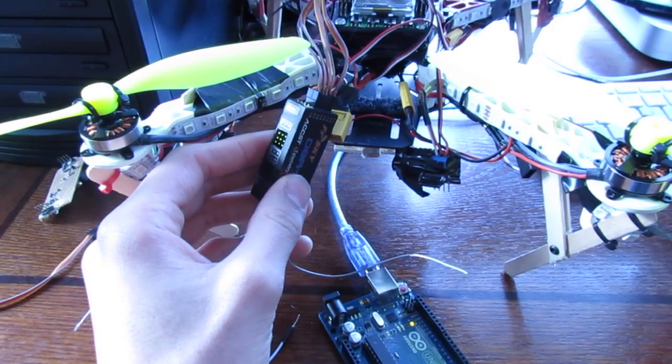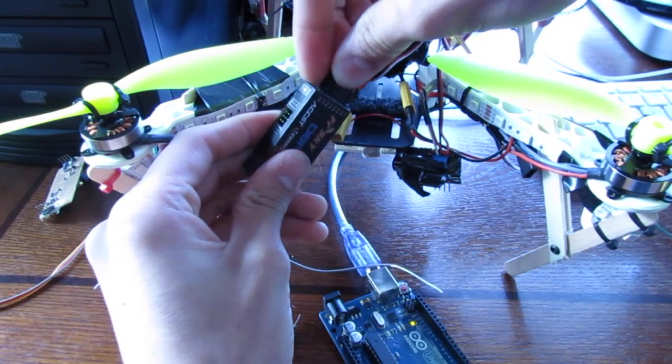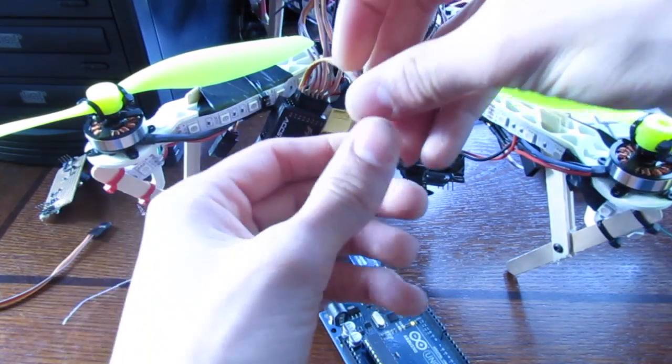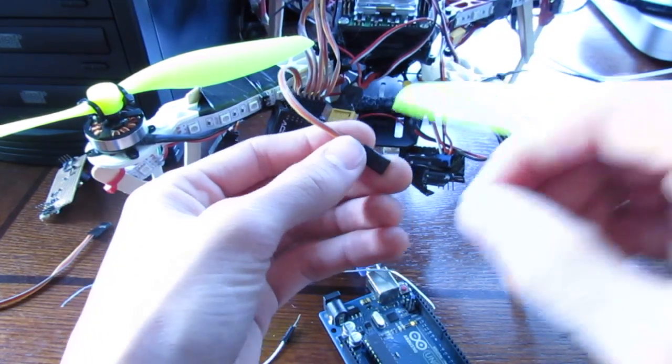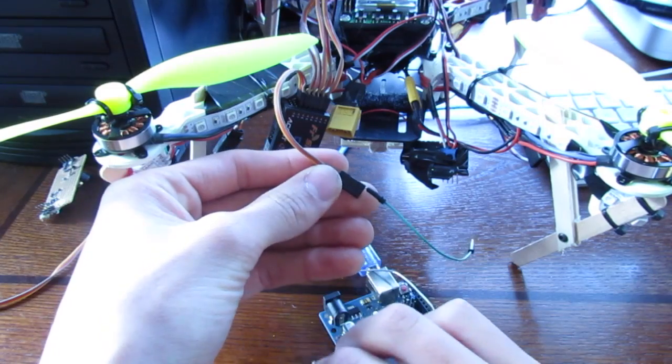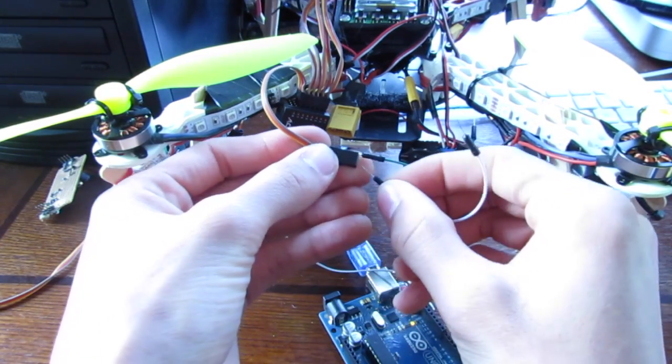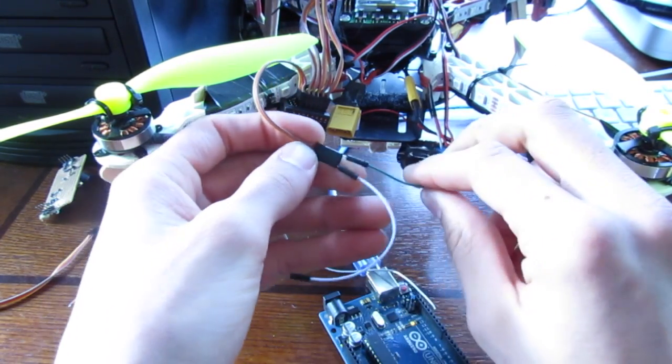To get started with this project you're going to need a male to male servo extension lead. Plug it on an empty channel on your receiver and plug the following wires to the Arduino. Ground goes to ground and the signal wire goes to pin seven on the Arduino.